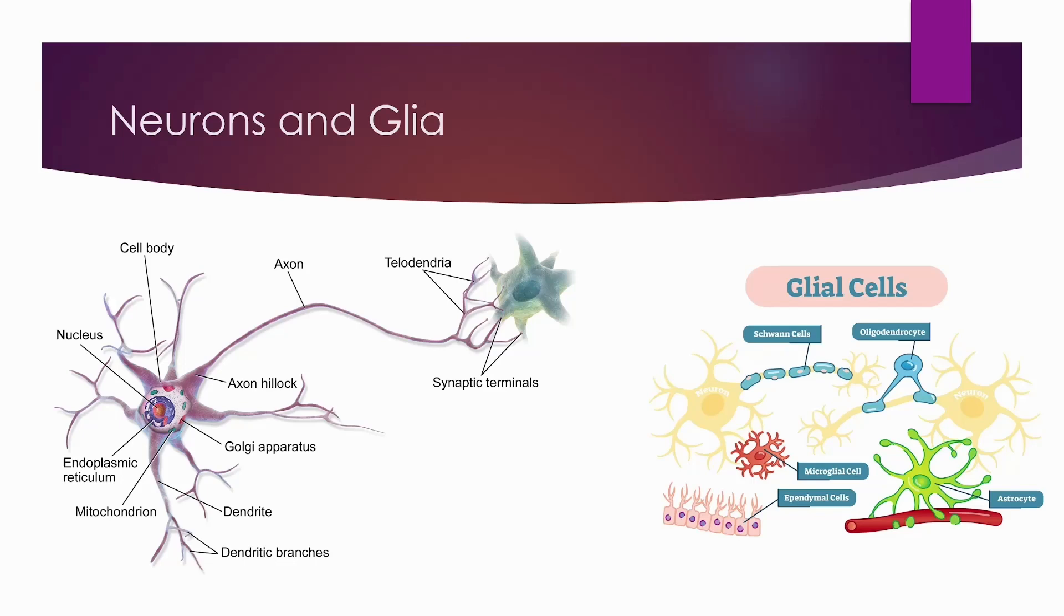Starting off, I'm going to circle three main parts of the neuron, which will be the dendrite, cell body or the soma, and the axon.